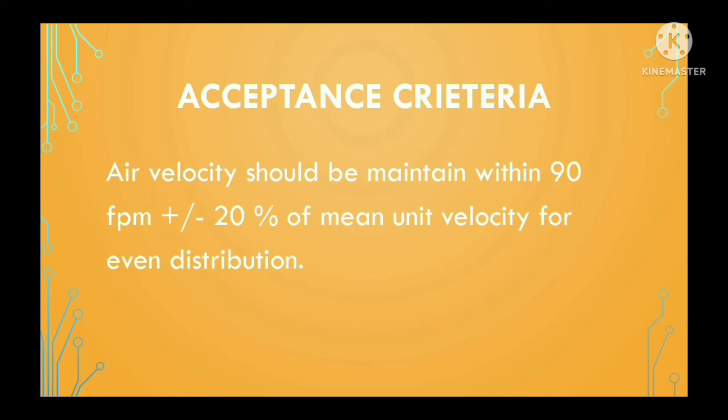Next, we will see the acceptance criteria for air velocity check. Air velocity should be maintained within 90 feet per minute, plus or minus 20 percent of mean unit velocity, for even distribution of temperature.